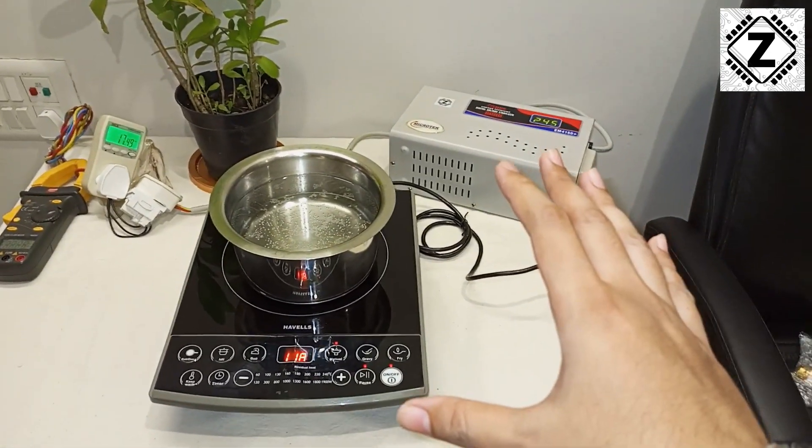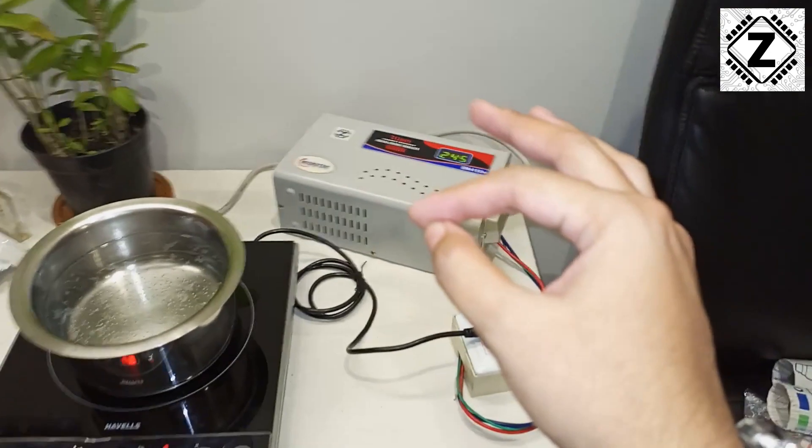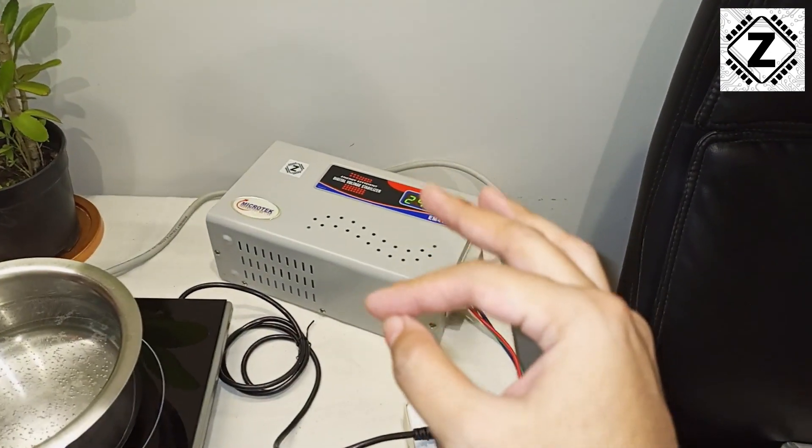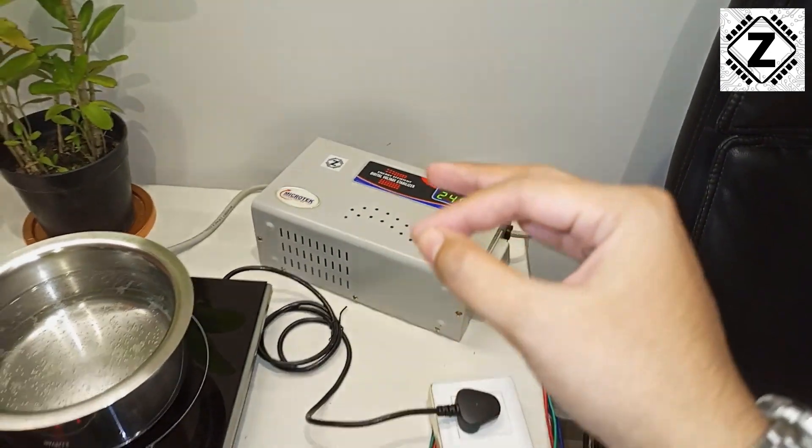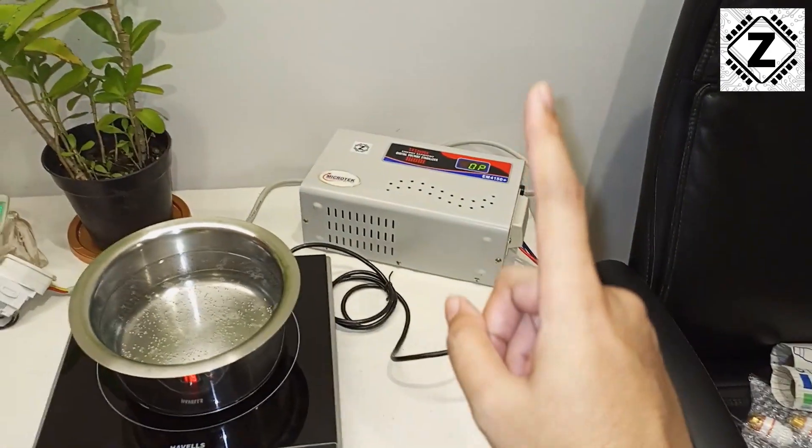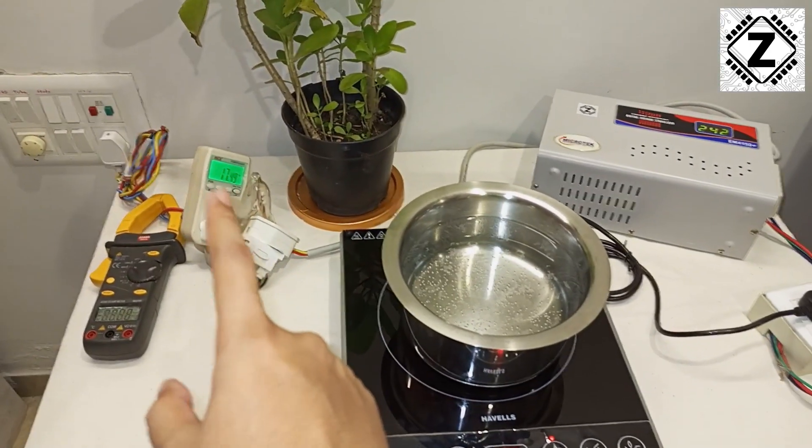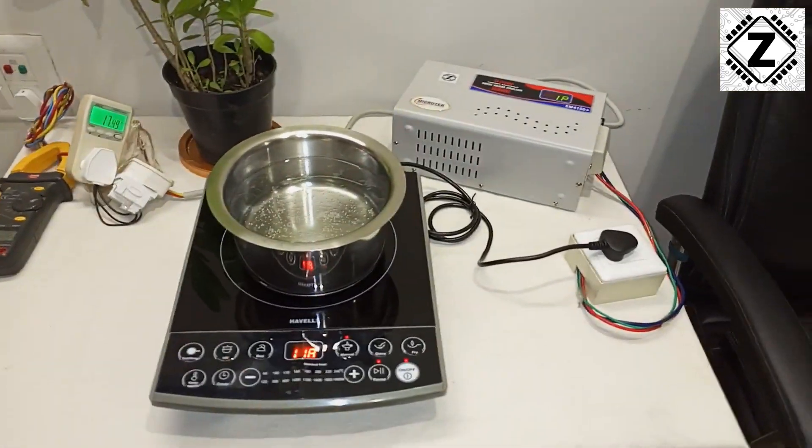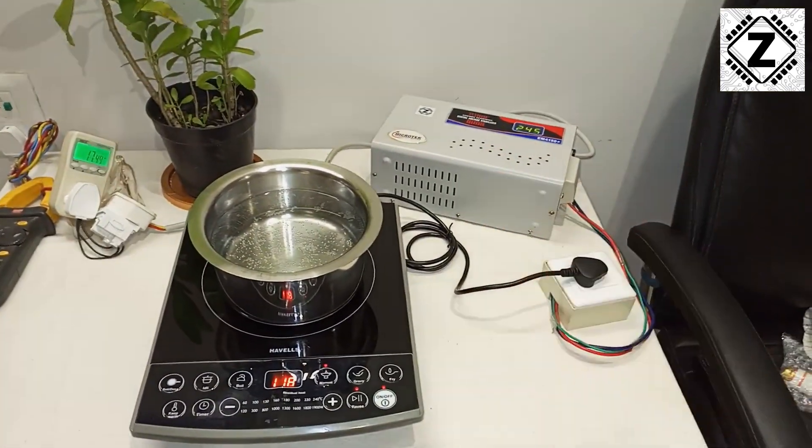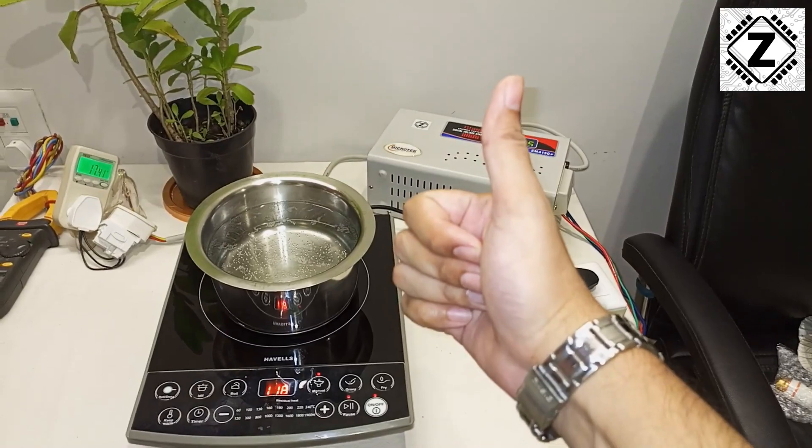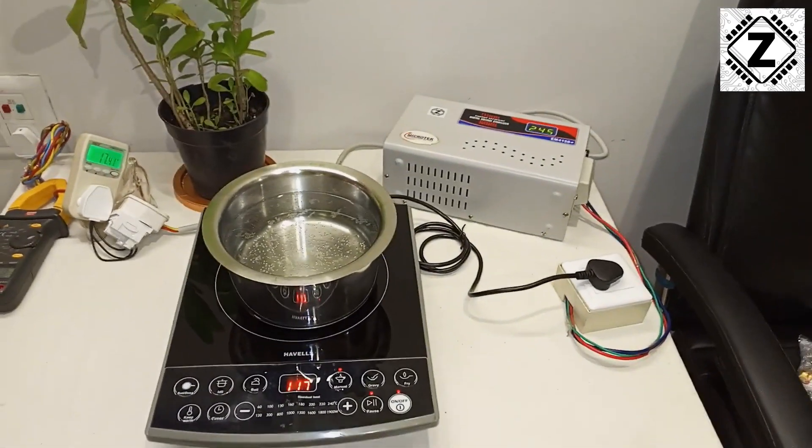You can go ahead and check it out. I'll leave all the links for these videos in the description section below. To conclude, I can absolutely recommend using stabilizers for your home appliances. The benefit of protection is far larger than any kind of power loss which we see on these meters. That was it for this little testing guys. I hope you liked it. Take care and have a nice day.